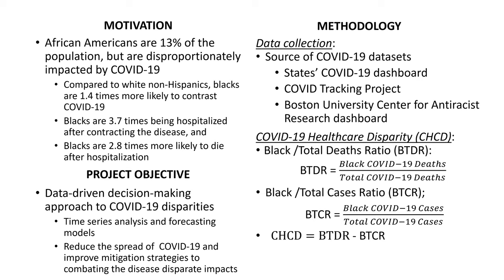For methodology, the first step is data collection. Datasets were obtained from state COVID dashboards, the COVID Tracking Project, and Boston University's Center for Anti-Racist Research dashboard. We define the following variables: BTDR is the Black COVID-19 deaths to total COVID-19 deaths ratio; BTCR is the Black COVID-19 cases to total COVID-19 cases ratio; and CHCD is the COVID-19 Healthcare Disparity, defined as BTDR minus BTCR.